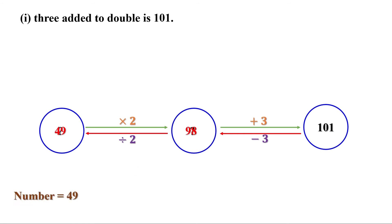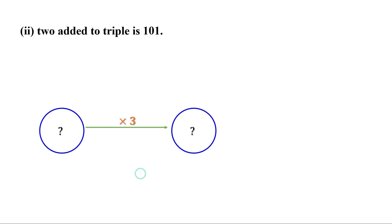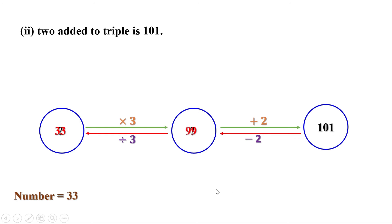You can check: double 49 is 98, and when 3 is added it is 101. Part 2: 2 added to triple is 101. First multiply by 3, then add 2 to get 101. Coming back: subtract 2 from 101 to get 99. That is 3 times the number, so divide by 3 to get 33. The number is 33. Check: 3 times 33 is 99, and when 2 is added we get 101. Correct.